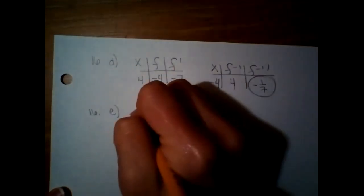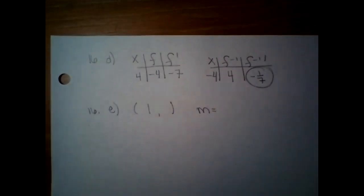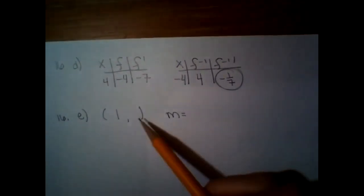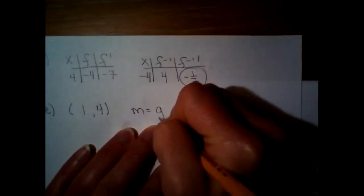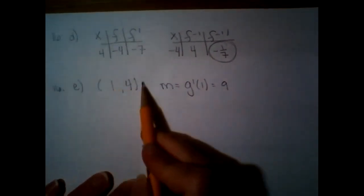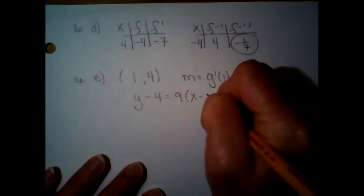For 16E, it says write an equation tangent to g at one, so our x value is one. We need a point and a slope from the chart. g of one is four, so the point is (1, 4). The slope comes from the derivative: g prime of one is nine. So the equation is y minus four equals nine times (x minus one).